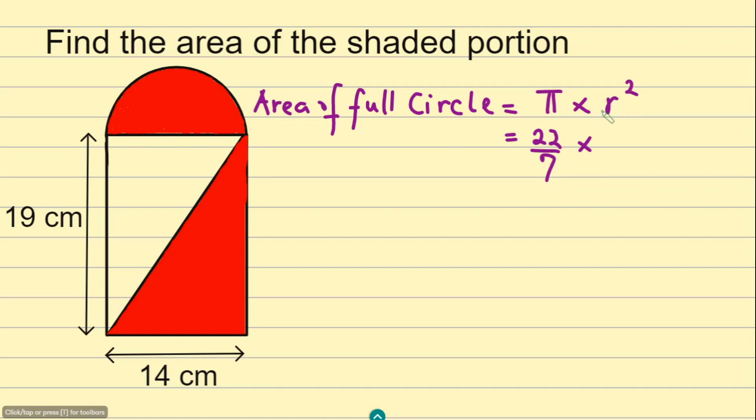We'll replace the radius with 7. That's 7 squared. Now 7 squared means 7 times 7, or 49. So let's simplify this: it's going to be 22/7 × 7 × 7.